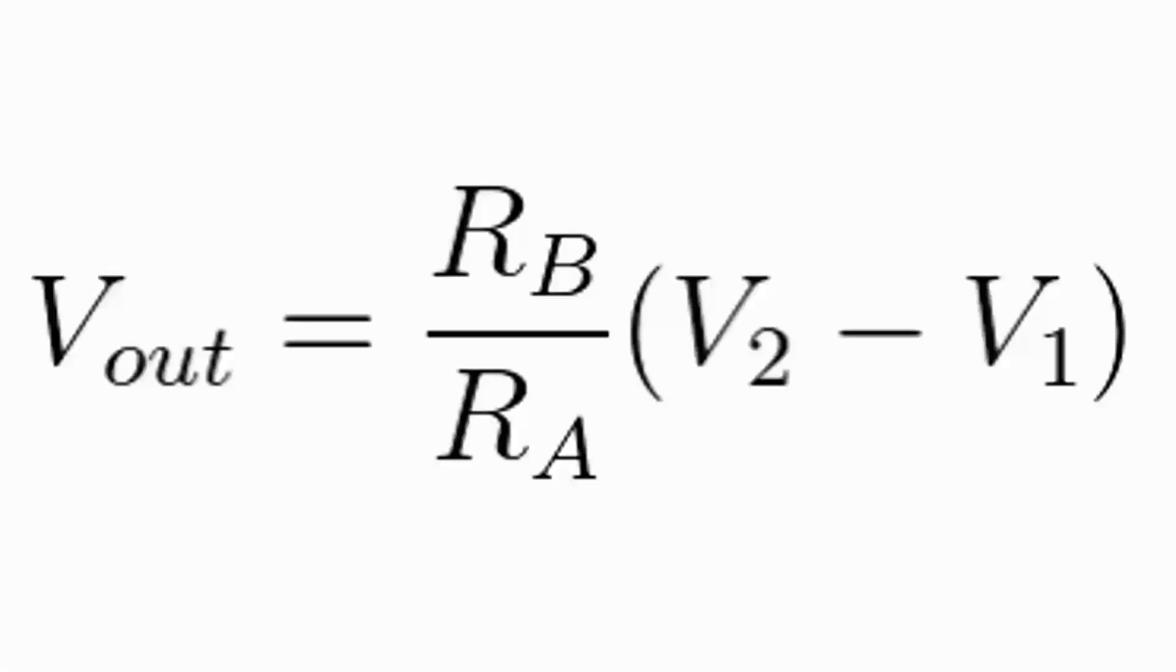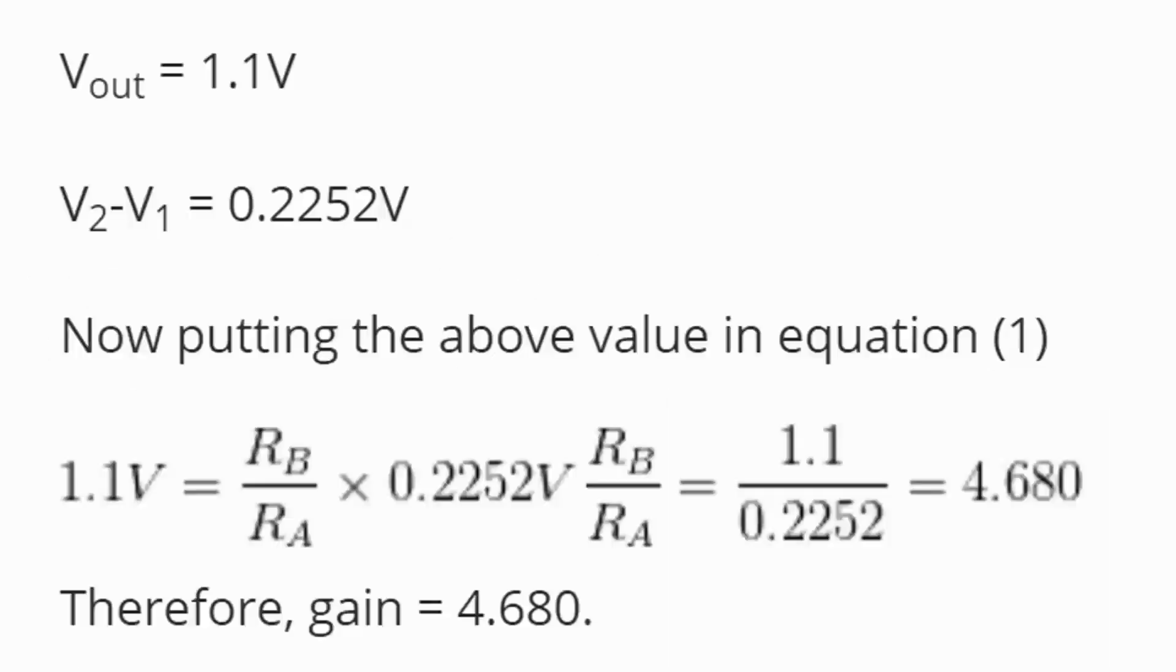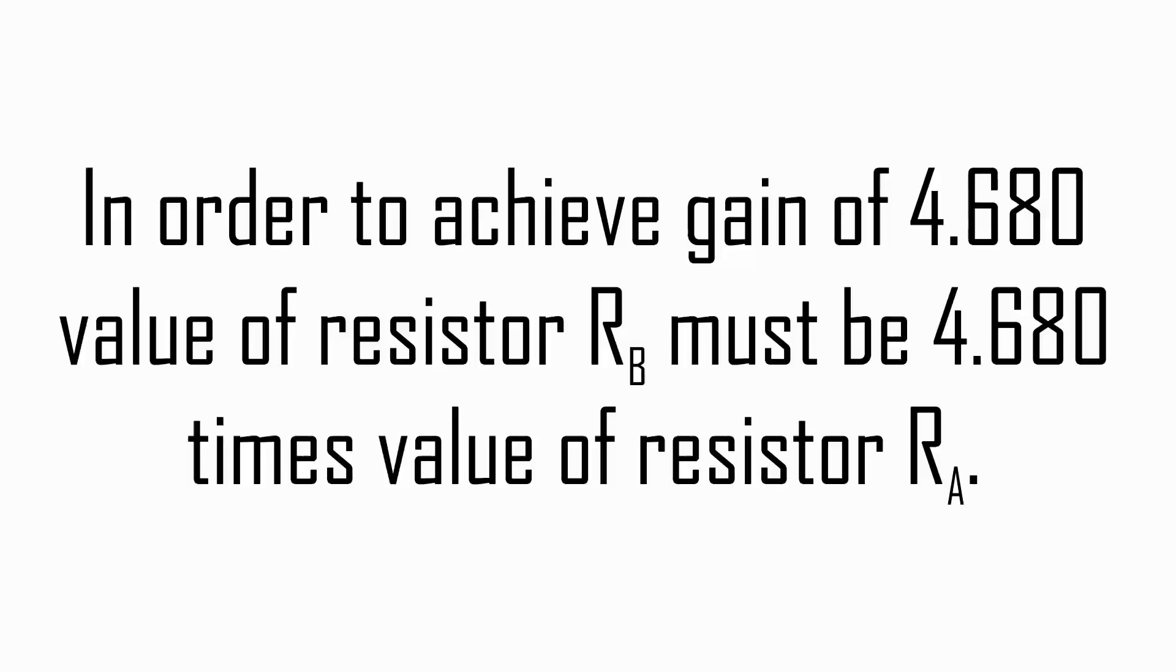Now we can calculate gain by using formula Vout equals Rb by Ra times V2 minus V1. Here Rb by Ra is gain and its value is equal to 4.680. In order to achieve gain of 4.680, value of resistor Rb (feedback) must be 4.680 times value of resistor Ra (input resistor).